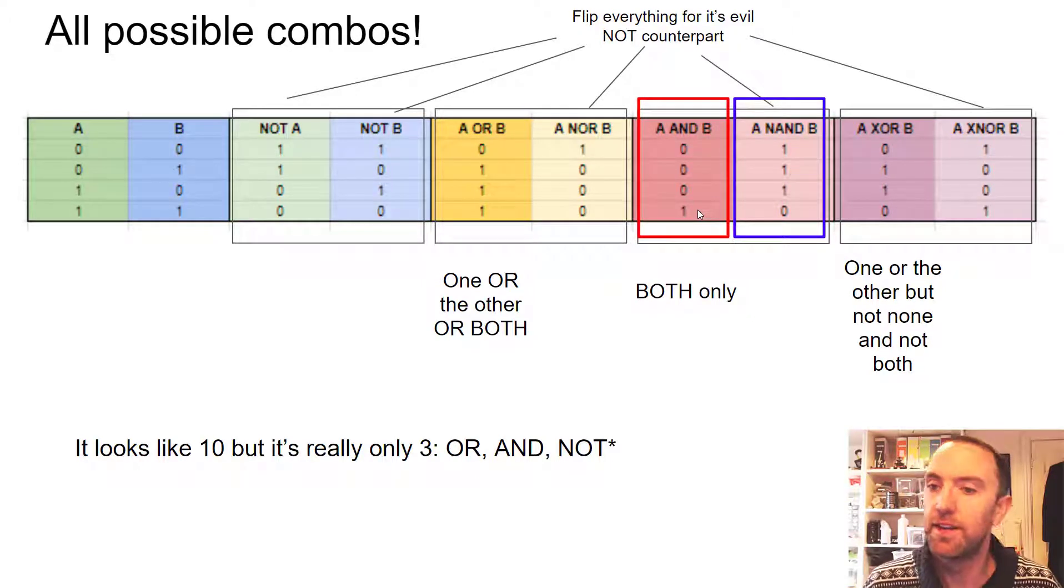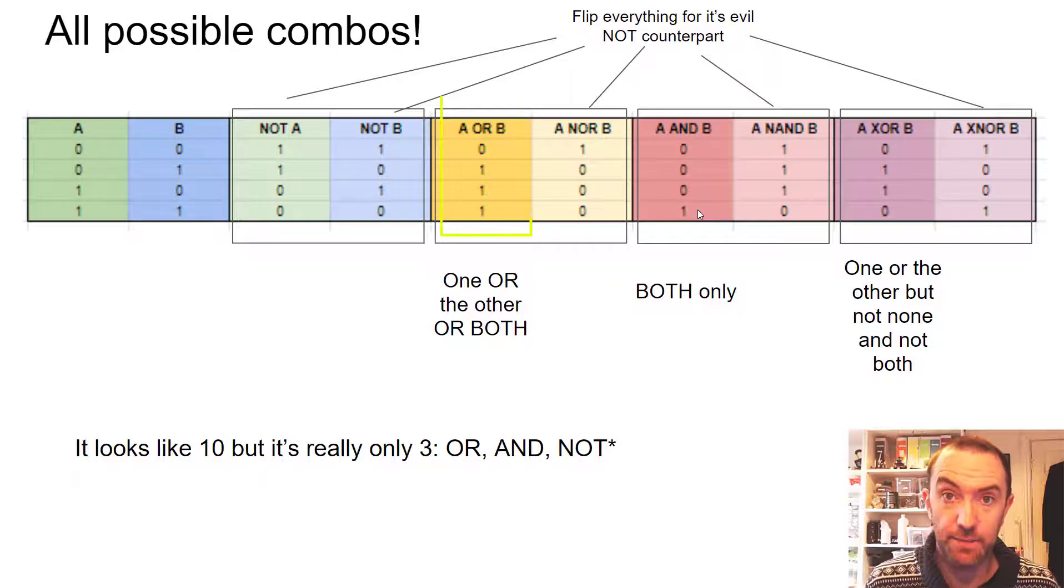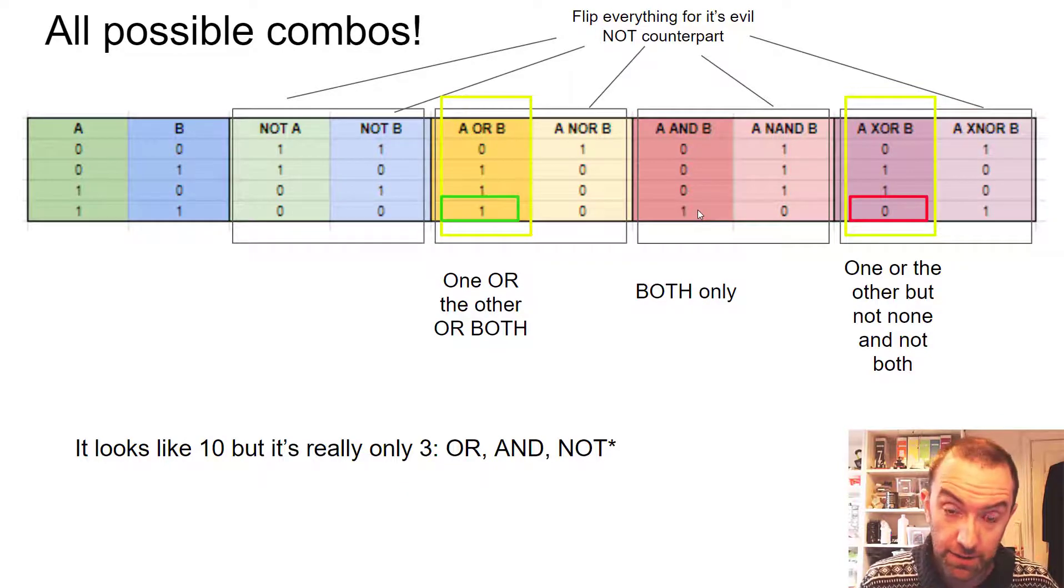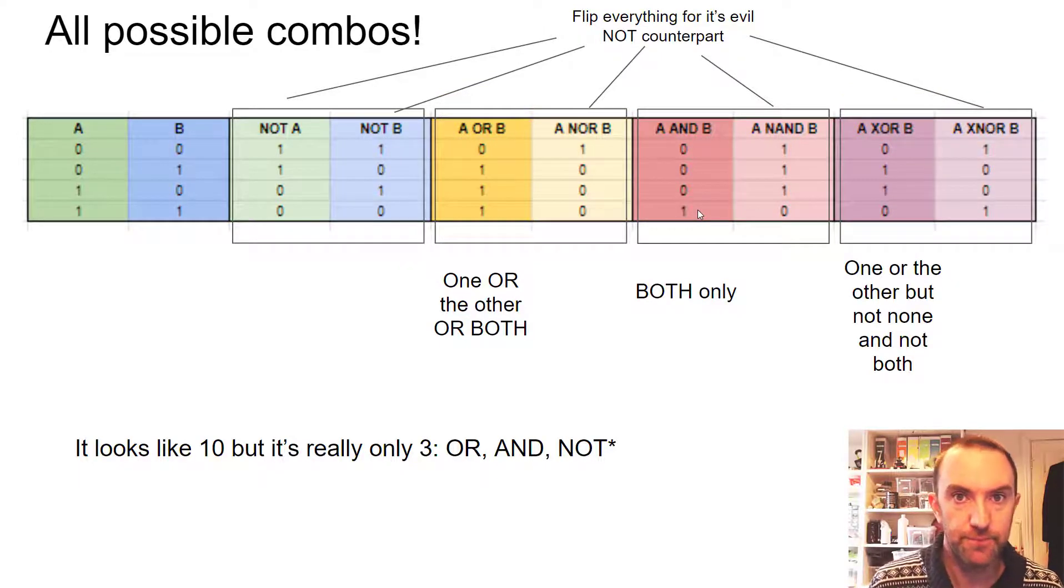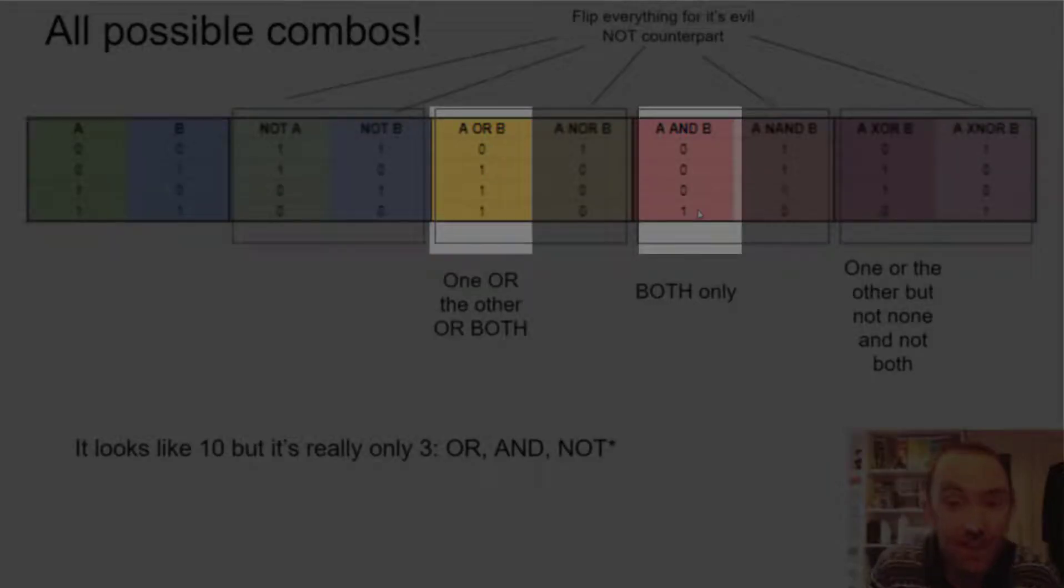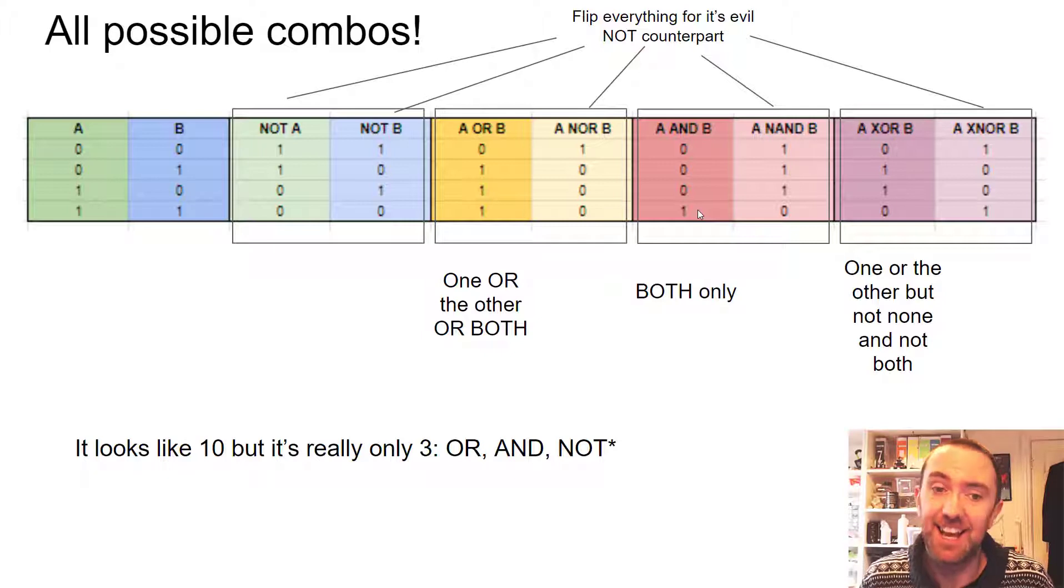The last thing we'll talk about is the exclusive one. So that's just the exact same as the OR column with the exception that we no longer accept both inputs being one. It's exclusively either A or B, but both of them can't be on, both of them can't be true. Or we also don't accept neither. So the good news as I said is there's just really two columns here. There's OR and there's AND, and then there's the NOT versions and I suppose the exclusive kind of version of OR as well.